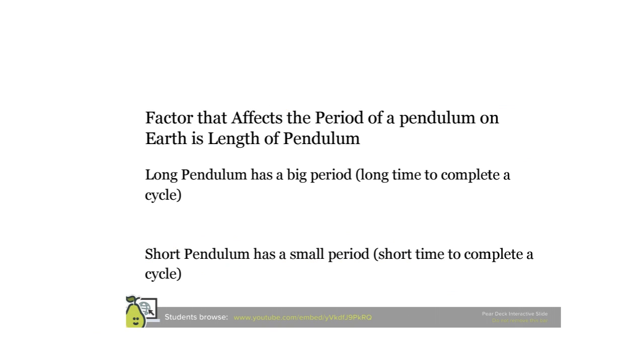In the lab you did the other day, the one fact that you found that really affected the period of a pendulum or the time it took—so again, period is the time it takes to go through one cycle—is the length. So a longer pendulum means a longer time. A shorter pendulum means a shorter time to go through a cycle.